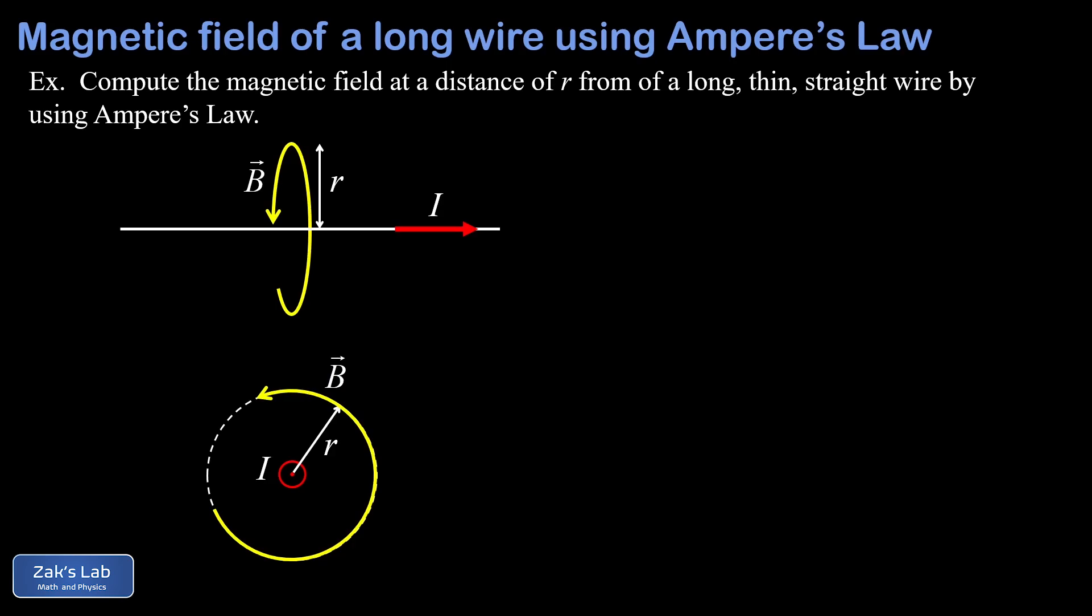We're starting here with a qualitative picture of what the magnetic field is doing. It's actually looping around this wire according to a right-hand rule. If you put the thumb of your right hand in the direction of the current, then the fingers of your right hand curl around this wire in the direction of the magnetic field.